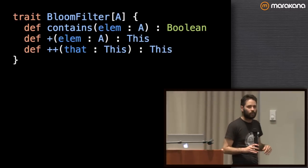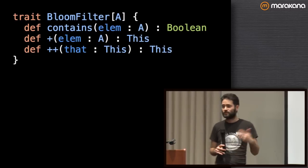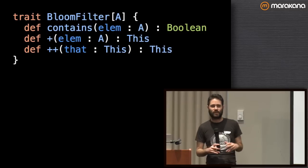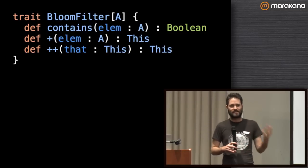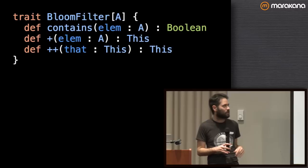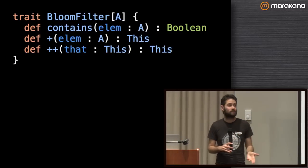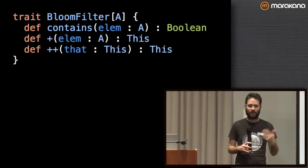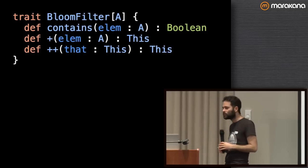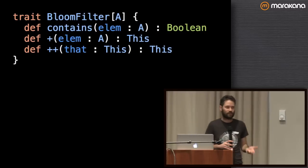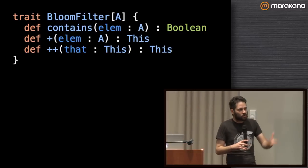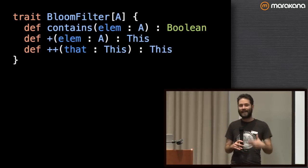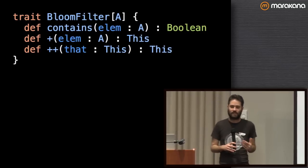In Scala, we want to make this nicer in a couple of ways. One is we probably want this to be immutable, and the other is that we can make this start to look like a set, because that's conceptually what this is. So we might have plus for adding an element, returning a new instance of the Bloom filter, plus-plus for union of two, and contains — which is also part of the set API in Scala. This thing starts to look a little bit like a set, and it's worth asking: what else from Set might we want to add?